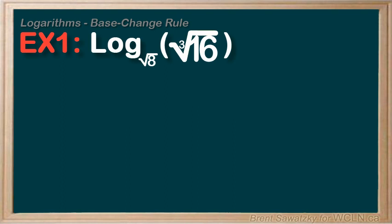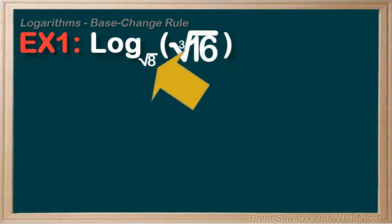But what are we going to change the bases to? We look at the numbers involved — we have a 16 and we have an 8. We remember back to exponents and think that 2 might be a good base. 2 to the power of 4 gives us 16, and 2 to the power of 3 gives us 8. So let's convert to base 2.